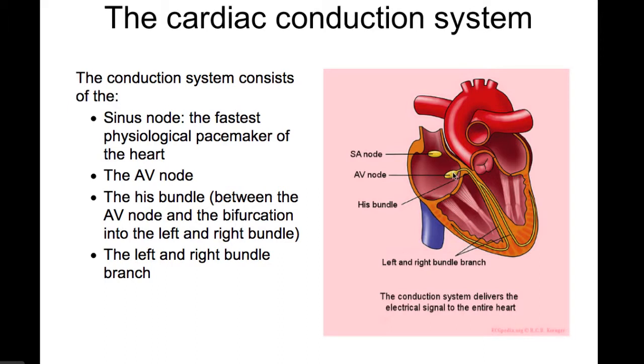This electricity goes through the atrium to the AV node and spreads through the His bundle and the left and right bundle branch to the cardiac muscles.